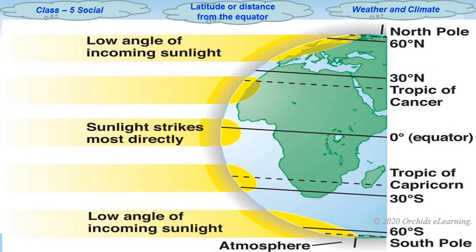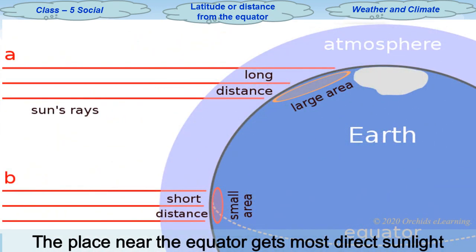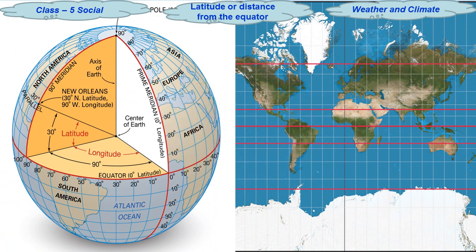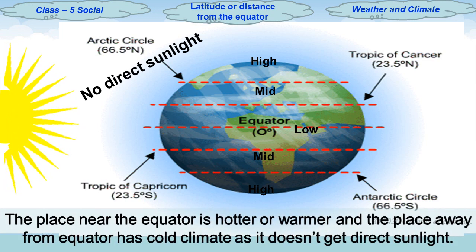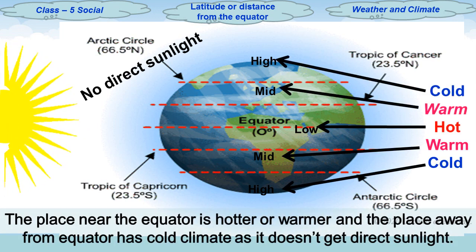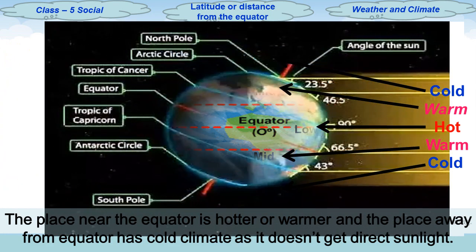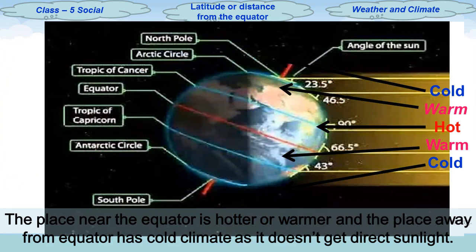Latitude, or distance from the equator: the equator, that is the latitude of zero degrees, gets the most direct rays of the sun. The latitude of a place tells us how close or far away it is from the equator. Places nearer to the equator are hotter or warmer, and as we move away from the equator, places get cooler as the rays of the sun fall less directly on them.